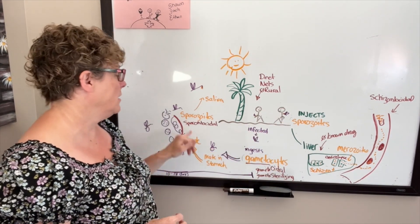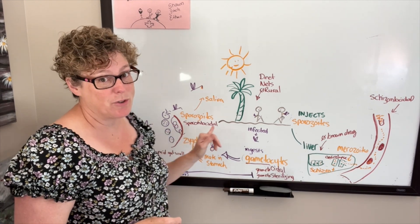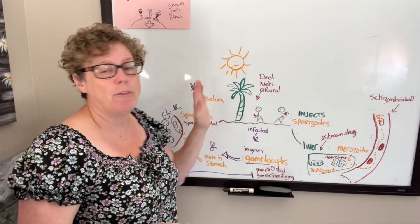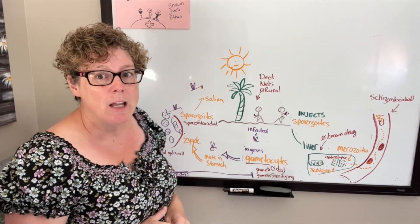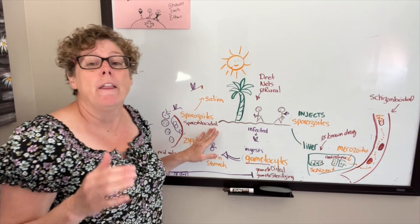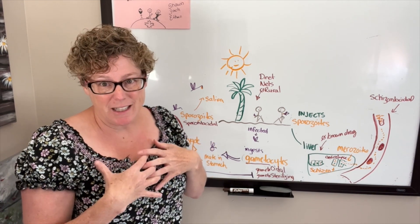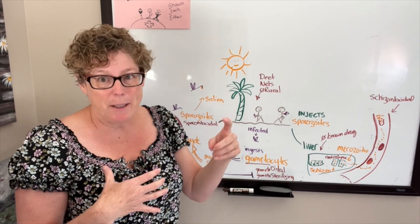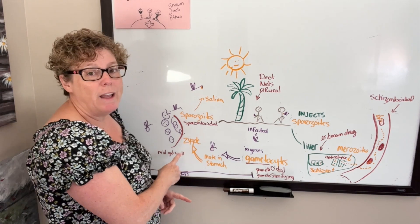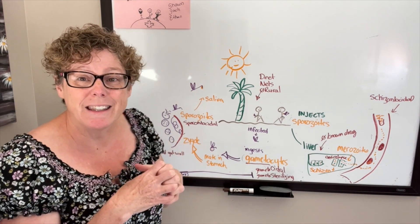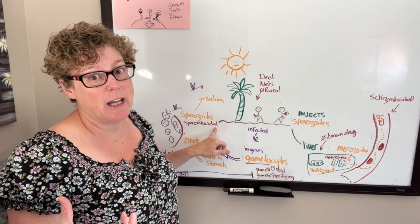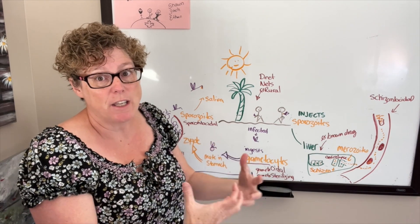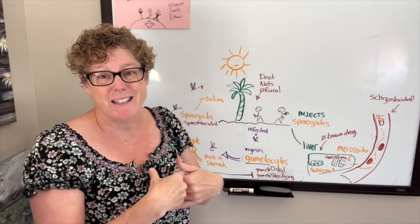If we get past the gametocyte stage and we have mating creating zygotes and sporozoites — the spore animals — there are also medications we can take that, when the mosquito takes that blood meal, will actually prevent them from mating in the stomach and creating sporozoites. They are called sporontocidal. The '-cidal' essentially means self-killing: they are killing themselves as a result of taking in this medication because they can't reproduce.